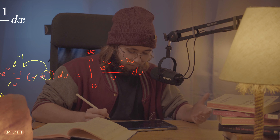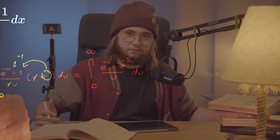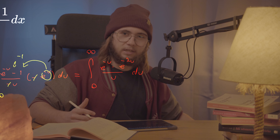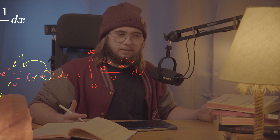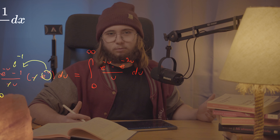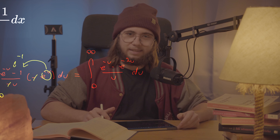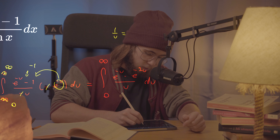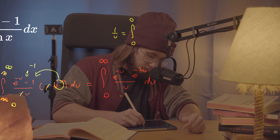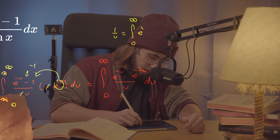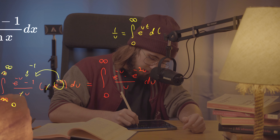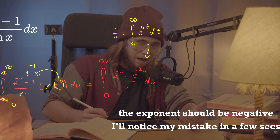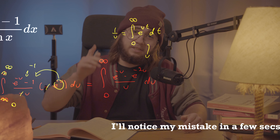Now I would like to perform the inverse of Feynman's trick — so instead of differentiating under the integral sign, I would like to integrate under the integral sign, which might sound weird, but it is even weirder than you might think. I'd like to evoke this definition of 1/u, which is the integral from 0 to infinity of e^(−ut) with respect to t. I'd like to plug this into the integral, and how it's going to help us you will see in just a few seconds.